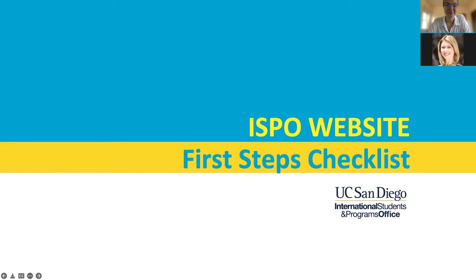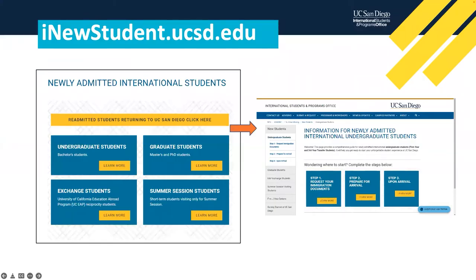Thank you, Grace. Hopefully some of you are familiar with our website already, but I'm going to take a quick walk through some of the resources on the ISPO website, beginning with the first steps checklist. If you go to inewstudent.ucsd.edu — this should be available in your Triton checklist when you accept admission — this provides various resources for newly admitted international undergraduate students to get started with their visa document request and go through several checklist items to get the best start at UC San Diego. Clicking on undergraduate students takes you to steps from requesting immigration documents to preparing for arrival and what to do once you get to UC San Diego.